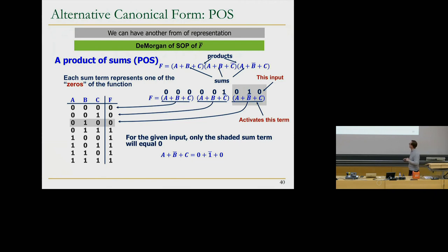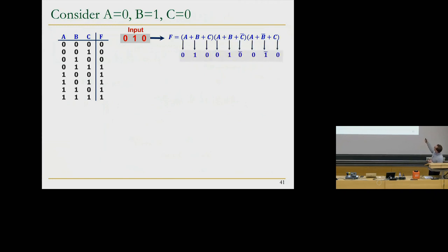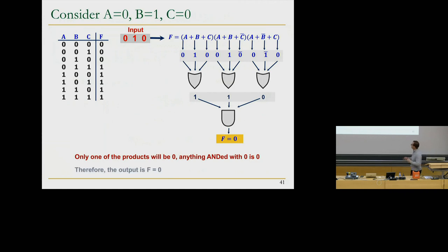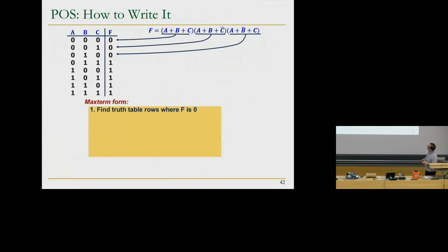This is the product of sums form of the function. If you give input 0, 1, 0: you evaluate all the sum terms and AND them; you get one, one, zero, and ANDing leaves zero. So to write the product of sums form: find the truth table rows where f is zero, and if there's a zero in an input column, that's a true literal in the sum term.